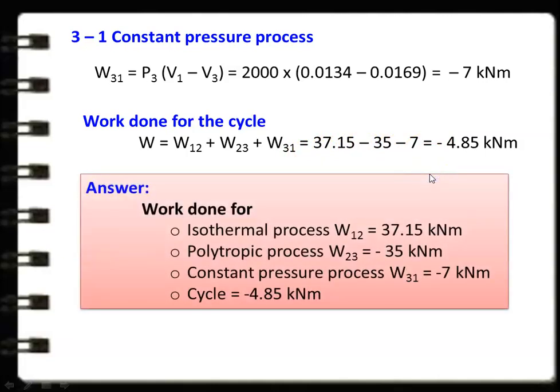Net work done for the cycle: W = W12 + W23 + W31 = 37.15 − 35 − 7 = −4.85 kNm. Summary of answers: work done for isothermal process = 37.15 kNm; for polytropic process = −35 kNm; for constant pressure process = −7 kNm; and net work for the cycle = −4.85 kNm.